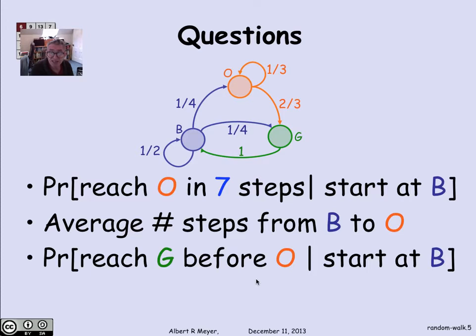Finally, you can ask a Gambler's Ruin type question: what's the probability of starting at B of getting to G before O? Well, in this trivial example, you can just read off the answer. You are going to get to G before O with 50-50 probability, because from B you have to go one place or the other with equal probability. But in general, this becomes a more interesting and complicated question, which you can solve by methods that we're about to lay out.